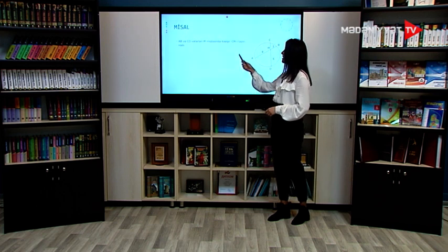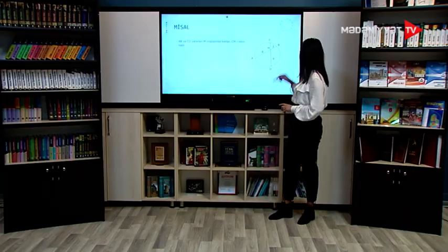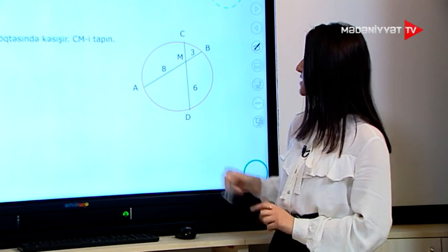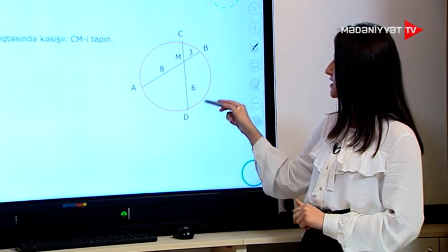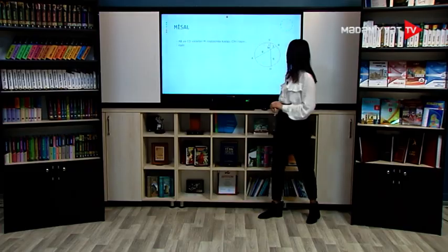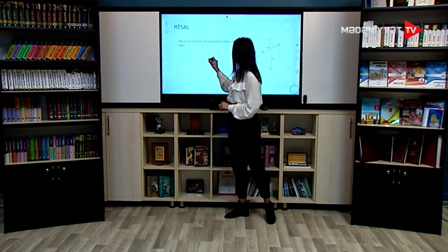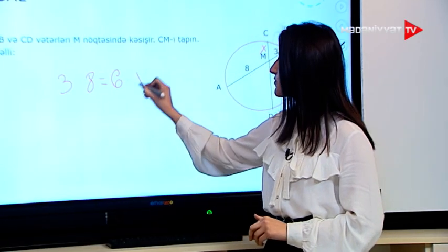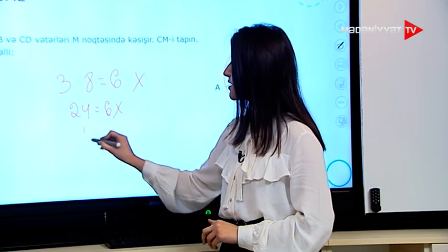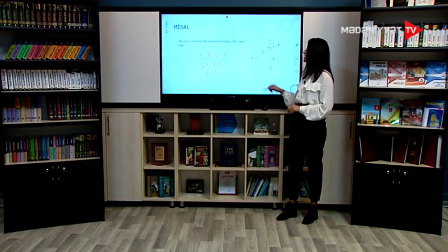İndi isə bir misalımıza baxacaq. AB və SD vətərləri M nöqtəsində kəsəşir, SM-i tapın. Bizdə BM = 3 cm, AM = 8 cm, MD = 6 cm verilmişdir. SM-i axtarırıqsa biz SM-ə x deyirik və xassəmizdən istifadə edərək yazırıq: 3 vurulsun 8 bərabər olacaq 6 vurulsun x-ə. Buradan alırıq ki, 24 bərabərdir 6x-ə, x bərabər olacaq 4-ə. Deməli, SM hissəsinin uzunluğu 4 cm-miş.